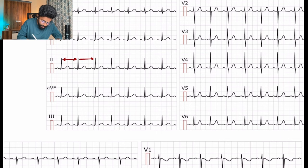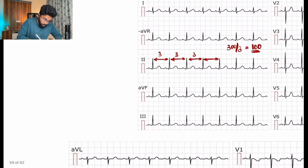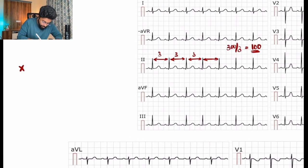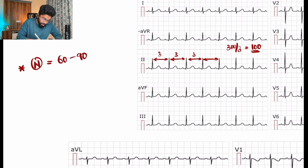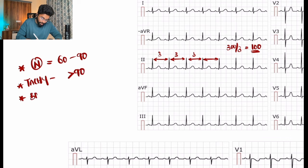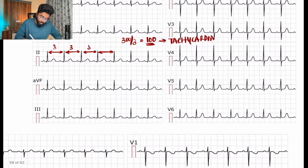First, calculate the heart rate. Normal heart rate is between 60 to 90. Tachycardia will be more than 90, and bradycardia will be less than 60 per minute.